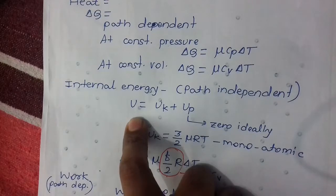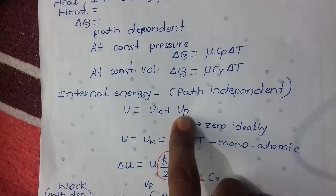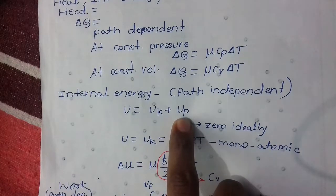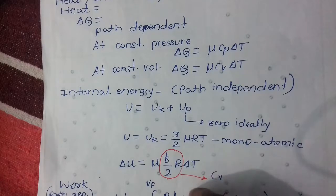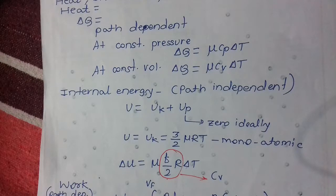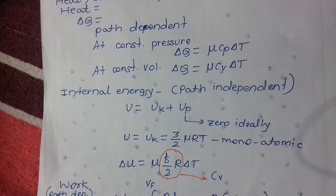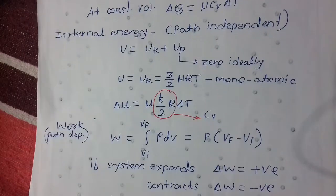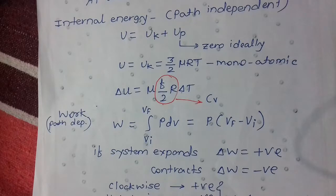Internal energy is made up of two components: kinetic internal energy and potential internal energy. Potential internal energy is zero for ideal gases, therefore expansion of ideal gases in vacuum does not result in a drop in temperature. However, when real gases expand in vacuum, their temperature decreases. Cᵥ = (F/2)R, where F is degrees of freedom.